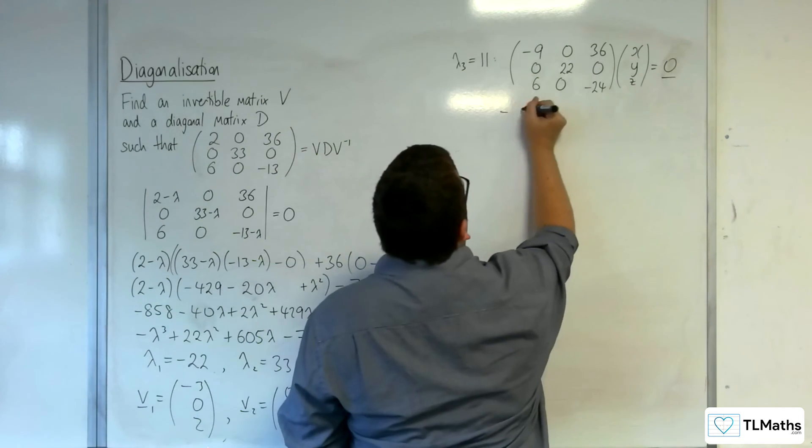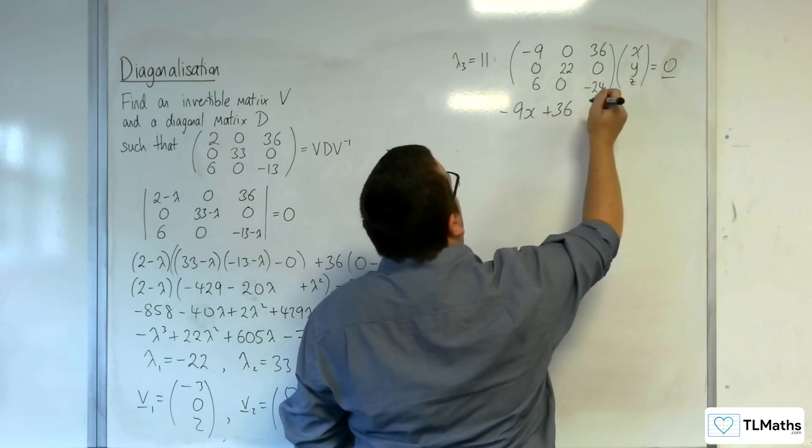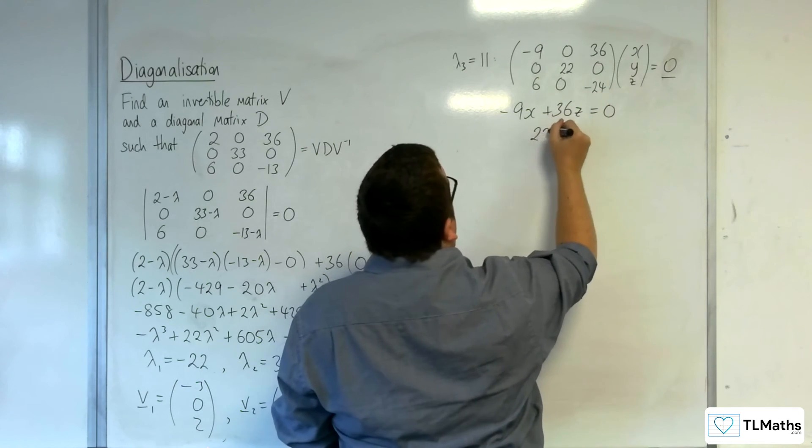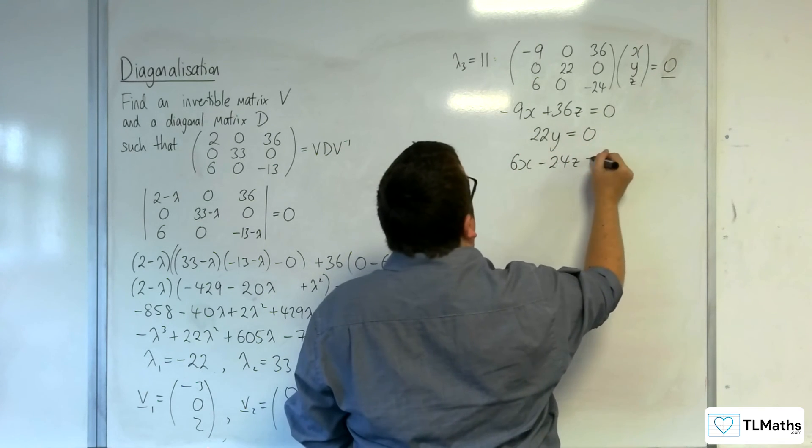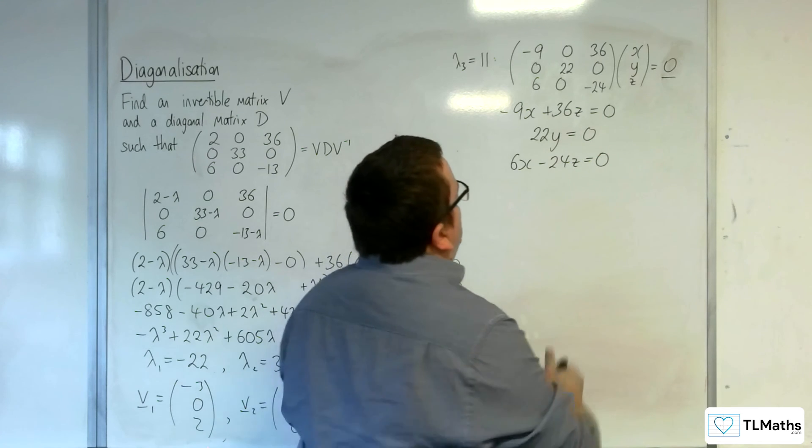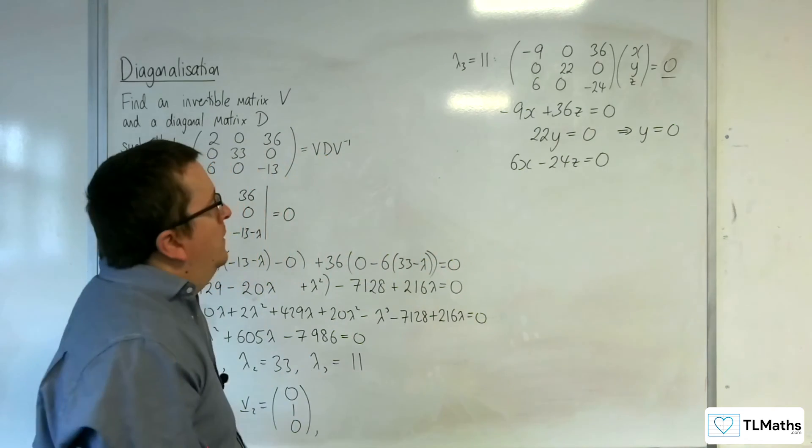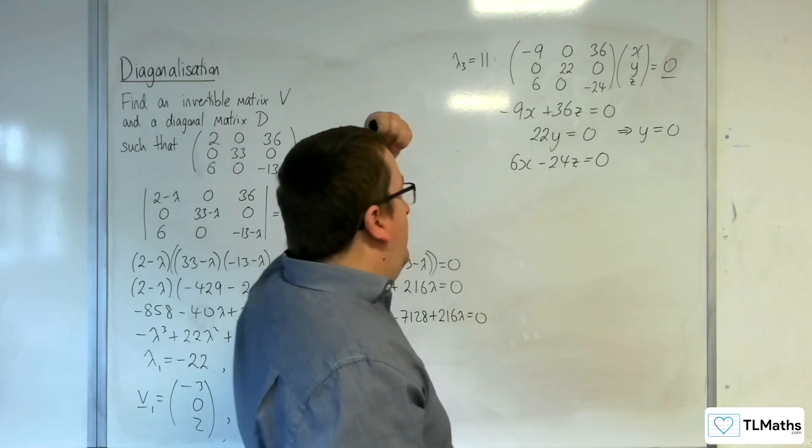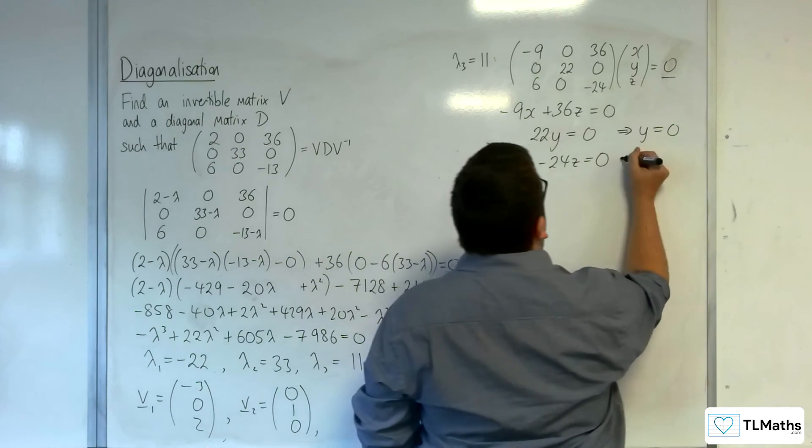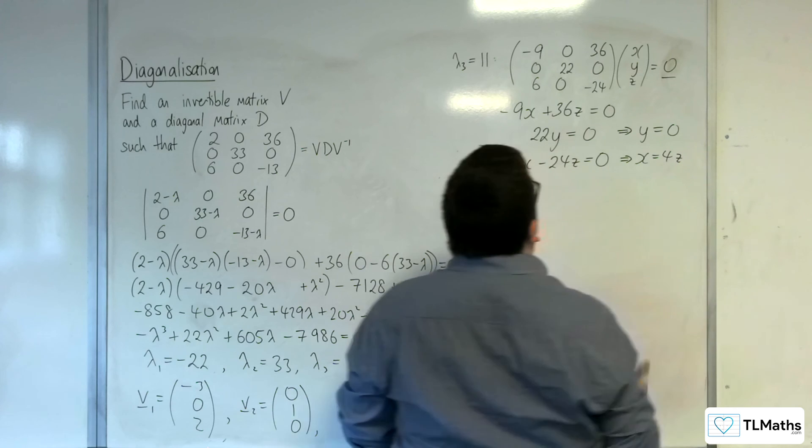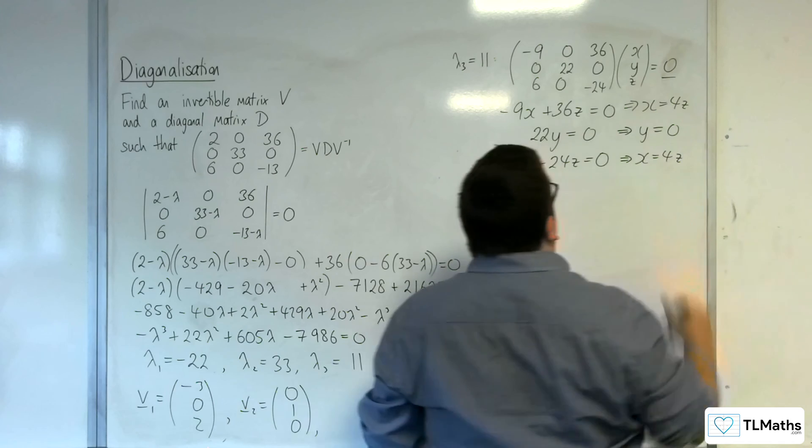So we have minus 9x plus 36z is 0. We've got that 22y is 0, and 6x take away 24z is 0. This equation is giving us that y is 0. Now, 24 divided by 6 is 4, so that's giving us that x is 4z. And this one is also giving us that x is 4z.